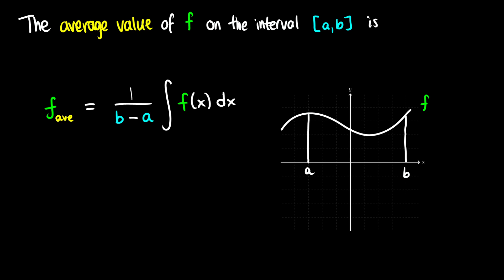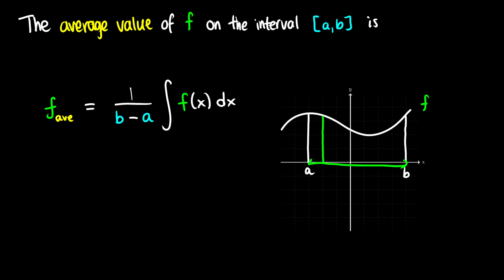If we think about this as a bunch of rectangles, like we did before we defined the integral, we could take the leftmost points and get a set of points. In terms of rectangles, we could ask what is the average area of all of those rectangles. With definite integrals, these rectangles become infinitely small, so what we're asking for is the height of all these extremely thin slices, and then we divide by the total distance from a to b.